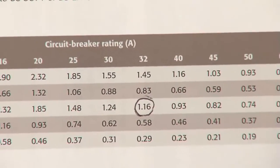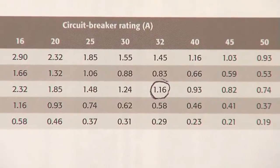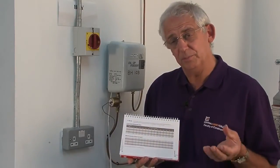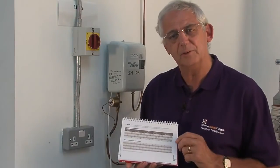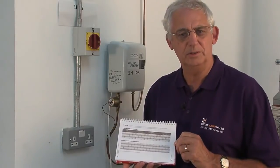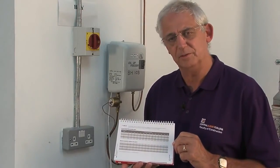And where the two lines meet, you can see there's a value of 1.16. 1.16 is much higher than 0.37, which is actually the value I measured, so I know that more current will flow through the system than is required to operate the circuit-protective device.